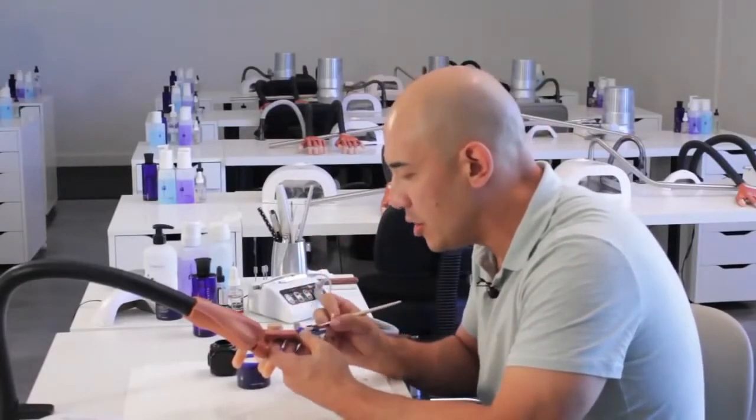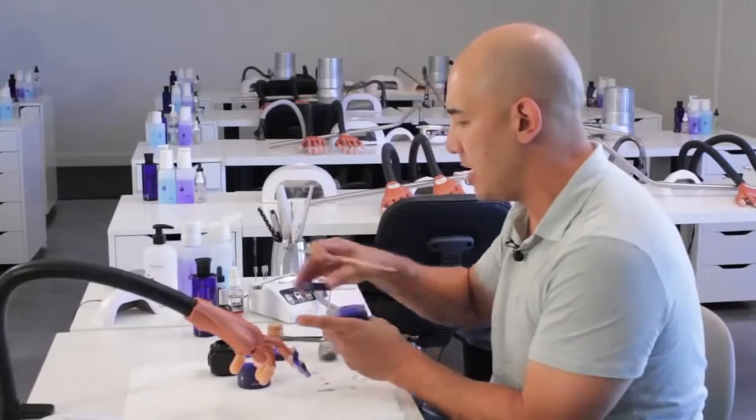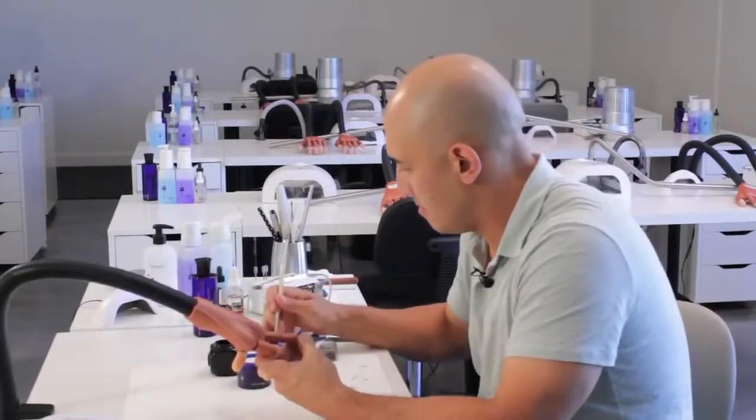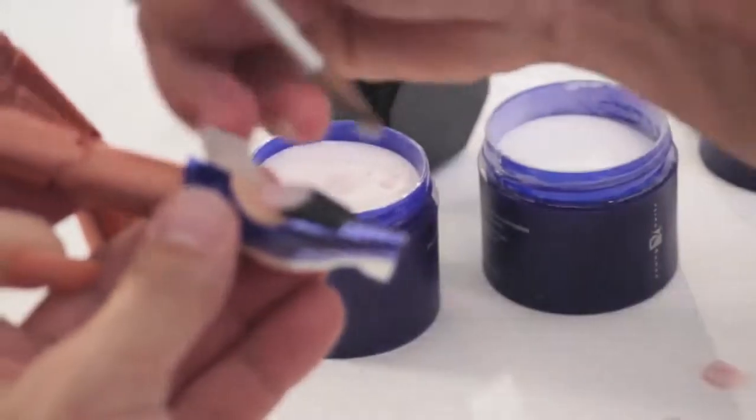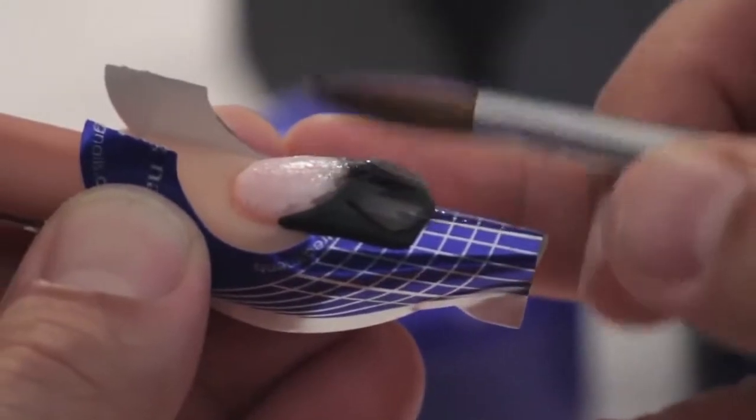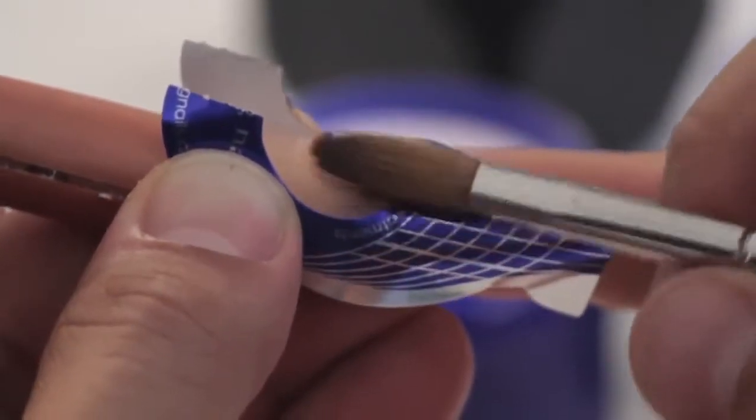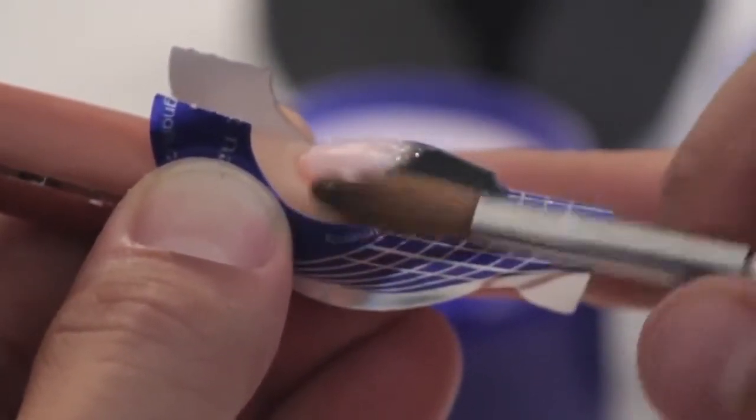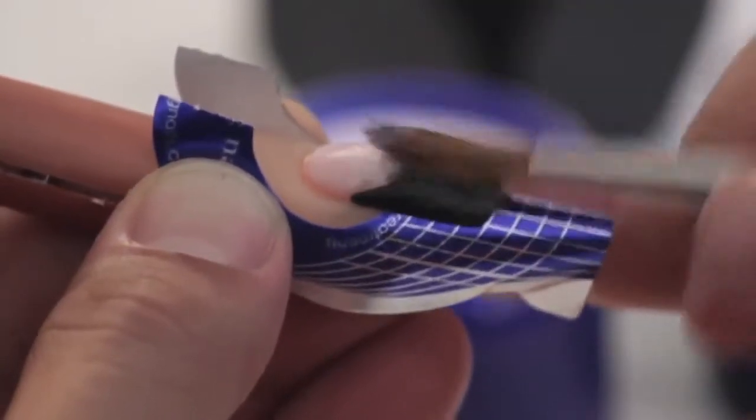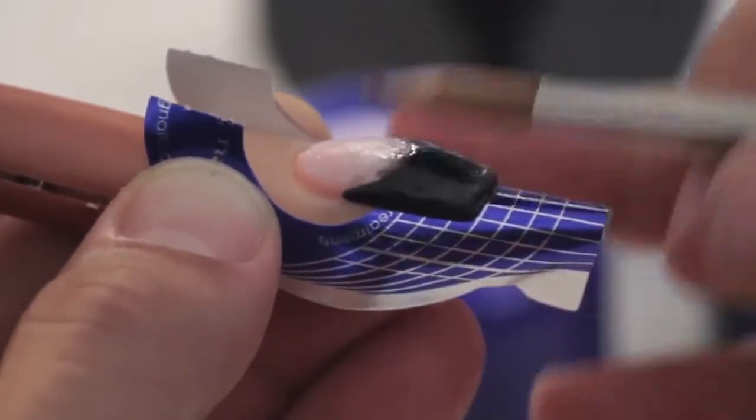One of the things I like to do to ensure that we get a really good cure when it comes to using this type of pigment-rich powder is by using the speed clear and put a nice thin coat over the tip. We don't want to bulk it up. We just want to apply a nice thin coat and that will give it just enough of an assistance so that it cures perfectly for you to file into shape.